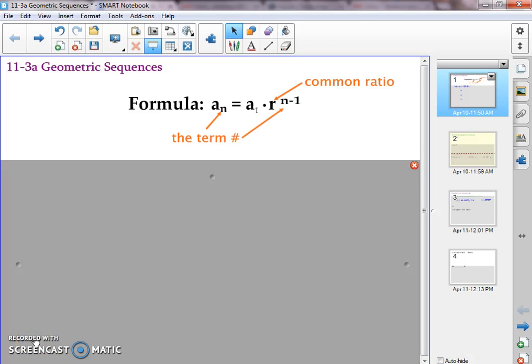Alright, we are going to switch gears now and talk about geometric sequences today, series tomorrow. Remind me what geometric sequences are versus arithmetic. Yeah, we're multiplying or dividing by the same number each time for the pattern in the numbers. So here's our formula here. We need the first term times the common ratio and then raised to the n minus 1.